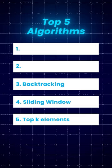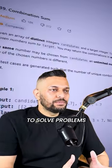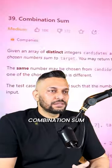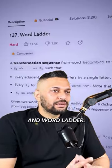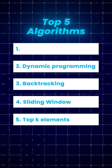Next we have backtracking, at number 3. Backtracking is used to solve problems like combination sum and word ladder. At number 2 we have dynamic programming, or DP.